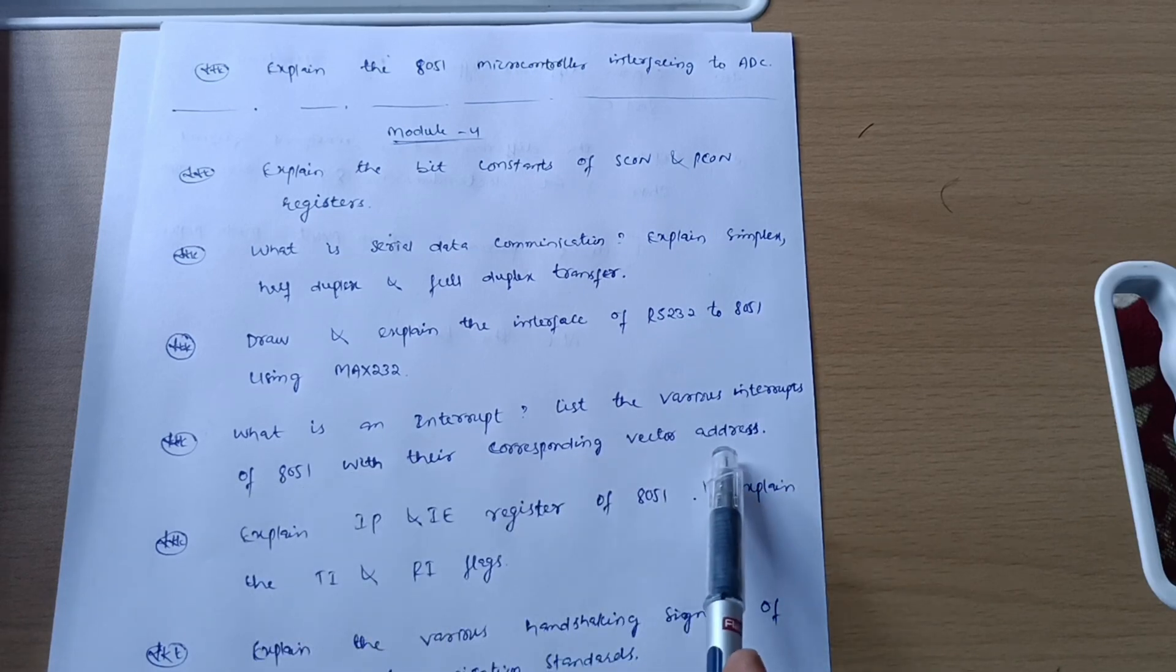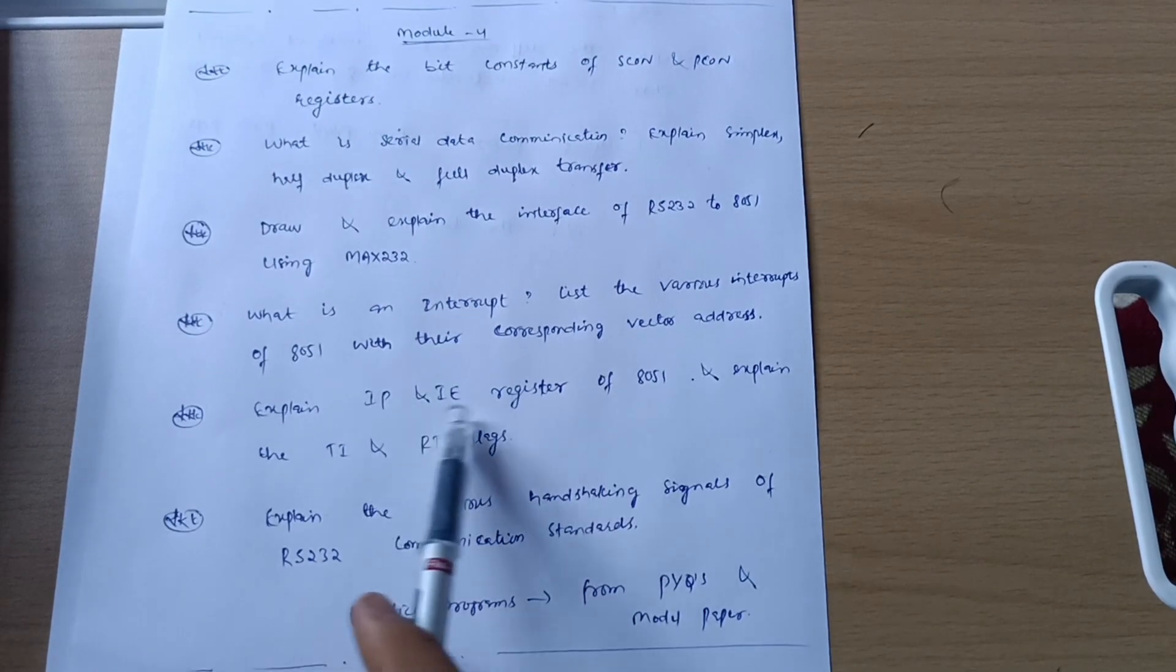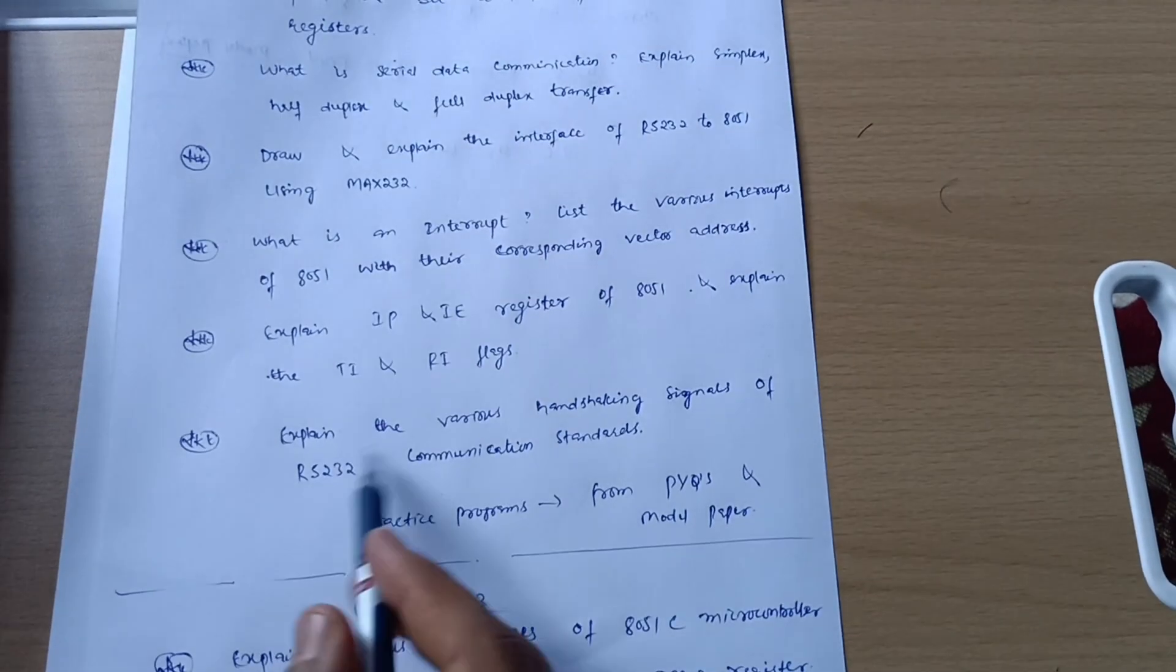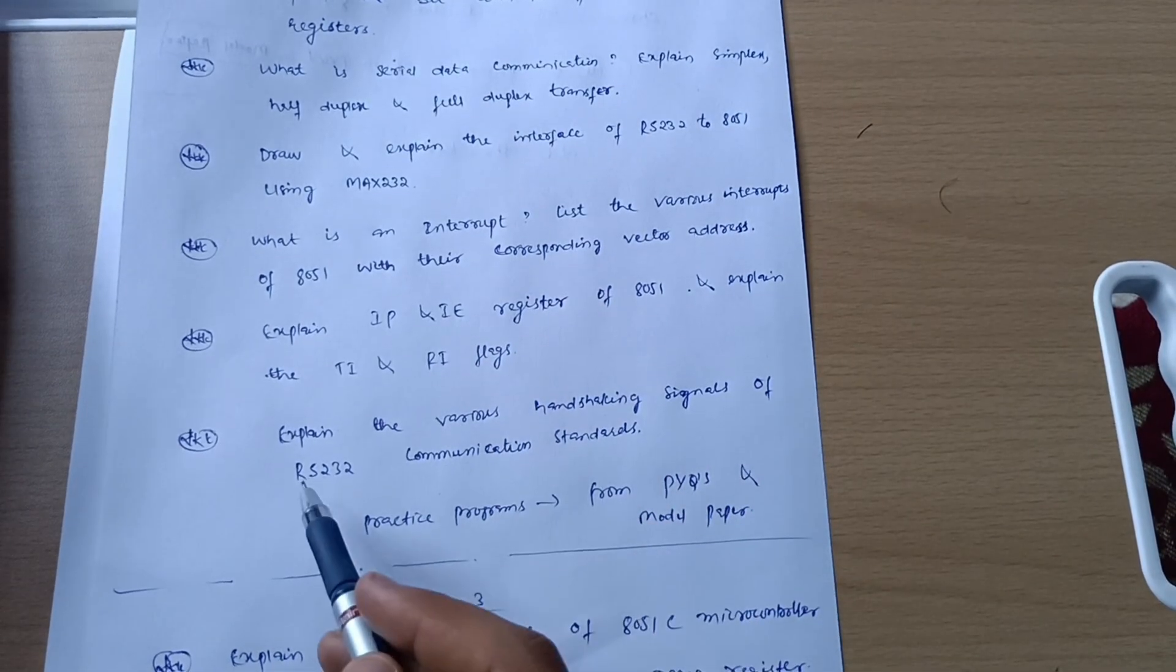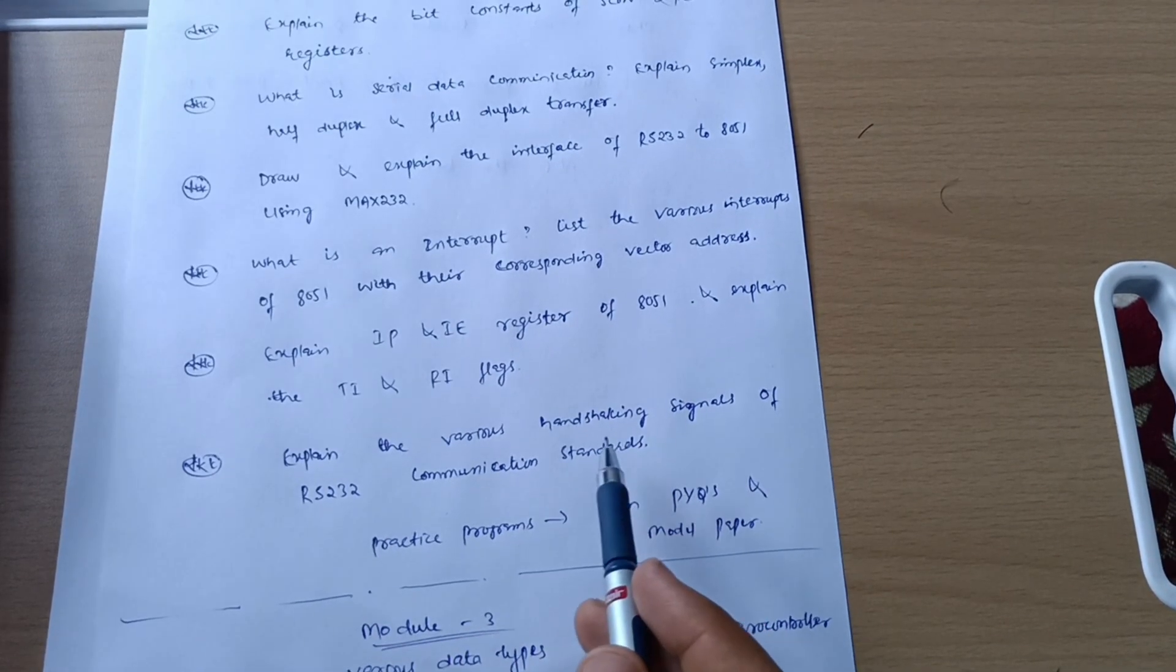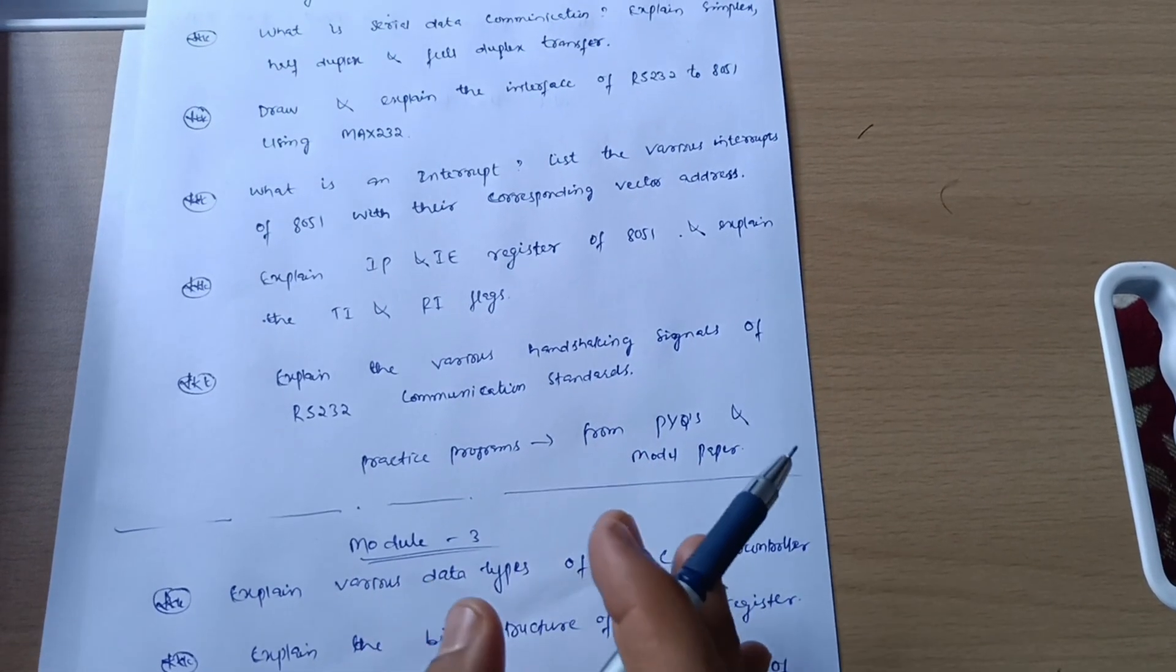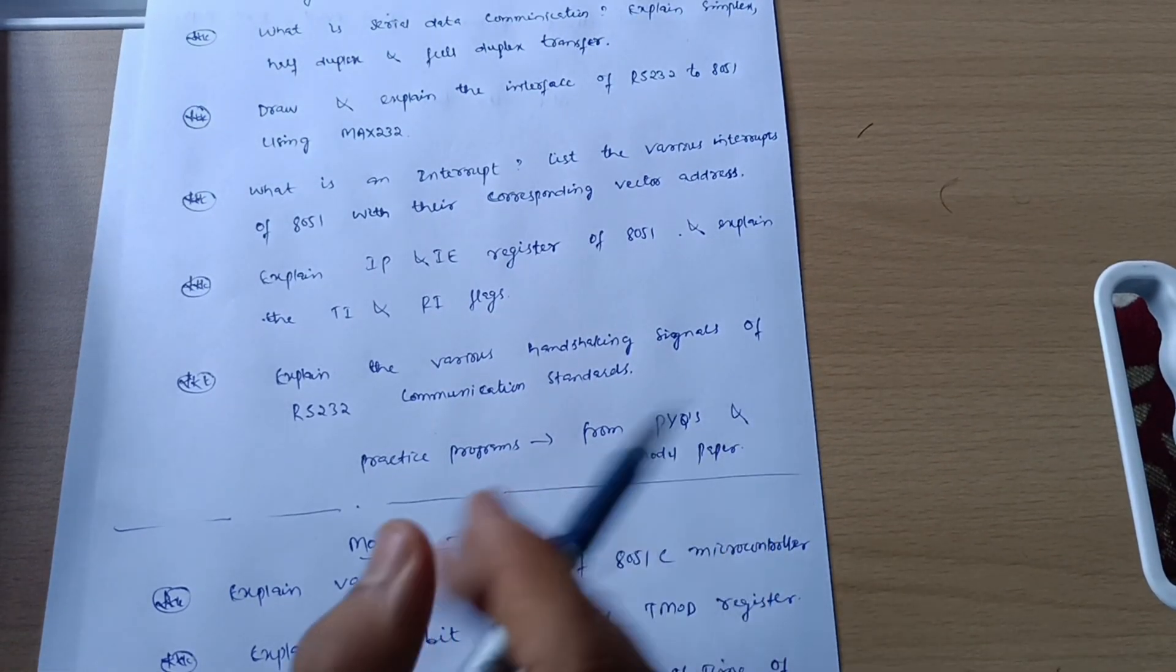What is an interrupt? List the various interrupts of 8051 with their corresponding vector address. Explain IP and IE register of 8051 and explain the TI and RI flags. Last question from Module 4 is explain the various handshaking signals of RS232 communication standards.